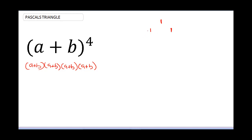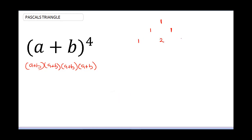1 starts here. 1 plus 1 gives me 2, and the edges are still 1. The next row: edge is 1, then 1 plus 2 gives me 3, then 2 plus 1 gives me 3, and the edge is 1. Always maintain 1 at the edges.